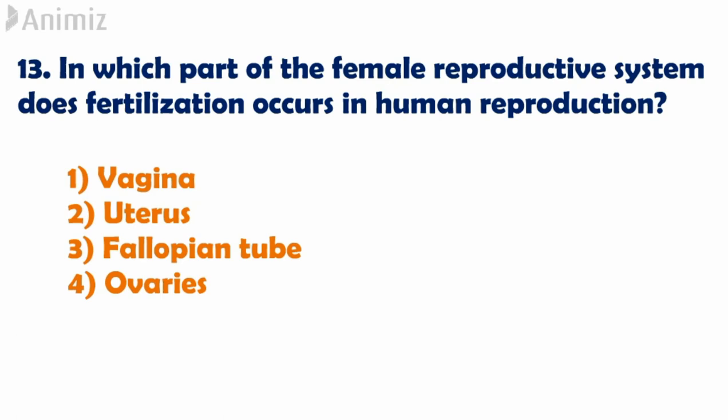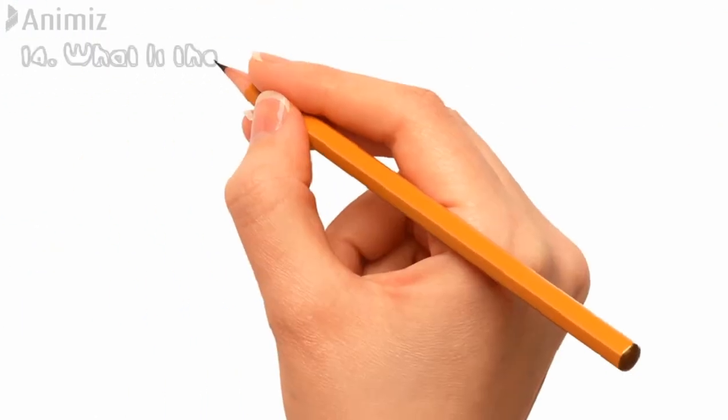Through this we can say that fertilization occurs in the fallopian tube.